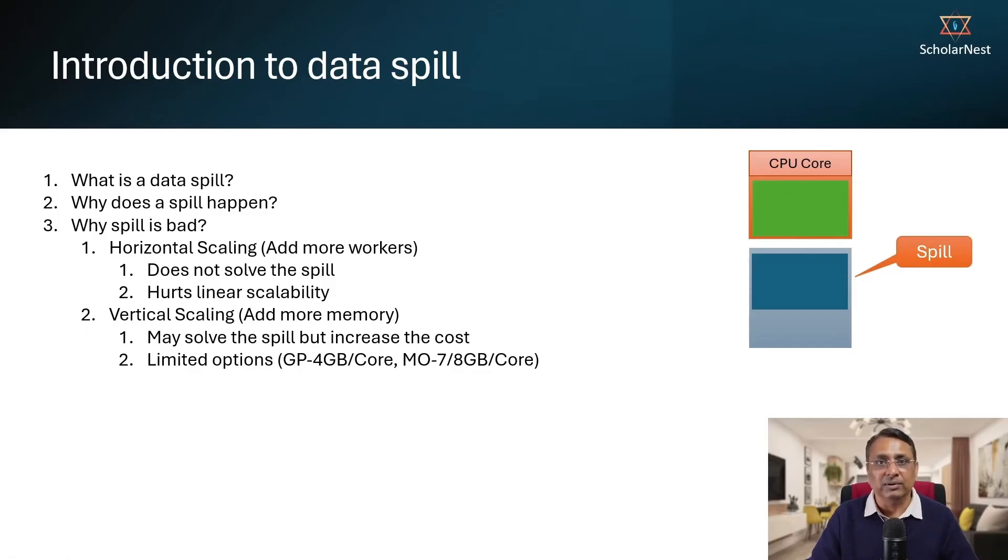And the remaining part of the data partition which doesn't fit into the memory can be saved on the local disk of the executor. And this is what we call the data spill. Data does not fit into the memory, so Spark has to spill some part of the partition, some data from that partition to the local disk of the executor.